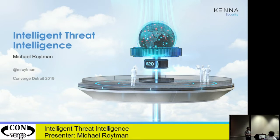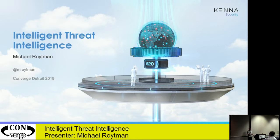I run data science at Kenna Security. We have what I think is the most comprehensive data set of in-the-wild exploitation. Not necessarily a breach, maybe nothing happened, but when a vulnerability is successfully, technically compromised. An IDS signature gets triggered, that vulnerability exists on that box, so you know that there was a technical compromise. Maybe that box has nothing on it, maybe it's the PDF to the Subway menu, but a compromise is possible. We use that to train probabilistic measures for every vulnerability and to build machine learning models.